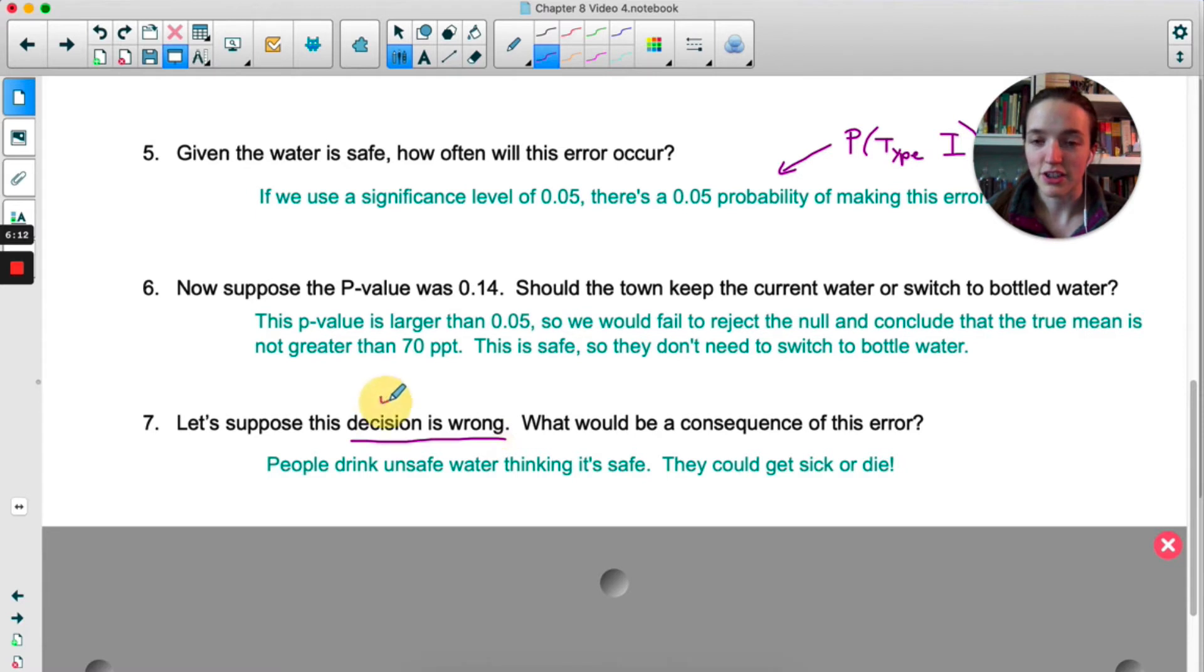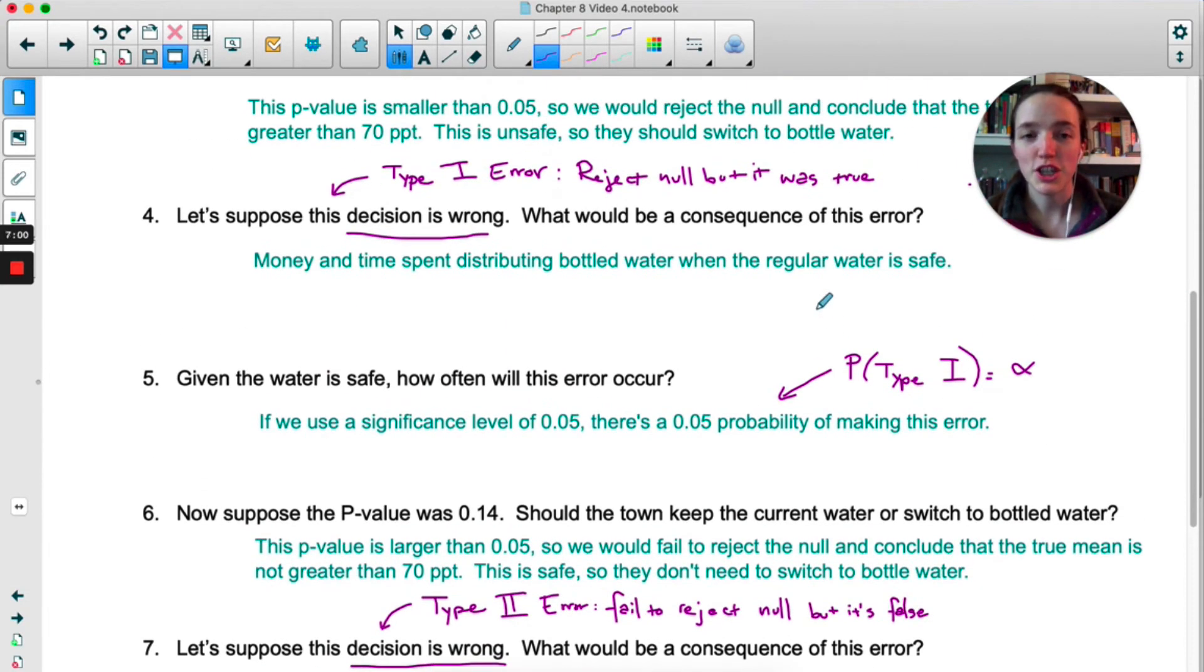Committing this mistake is called a Type 2 error. You fail to reject the null but you should have rejected it, it's false. So Type 1 you reject the null but it was true. Type 2 you fail to reject the null but it was false.